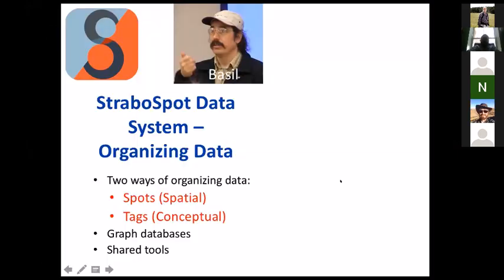The first thing I want to talk about with StraboSpot is how the data is organized. This came out of a lot of workshops with different people — actually from the first user workshop on how to organize it. There are two big concepts here: spots and tags. The StraboSpot system is designed around these two concepts, and in particular we utilize something called a graph database, which Doug will talk about more.